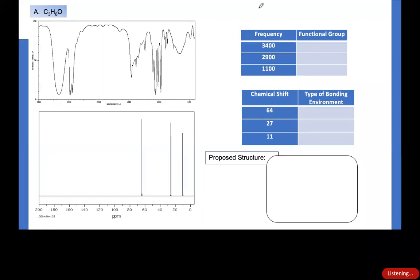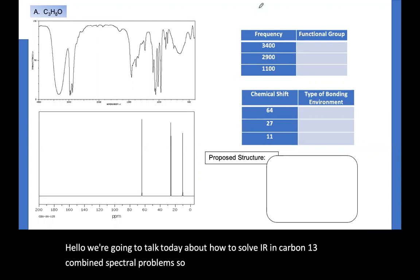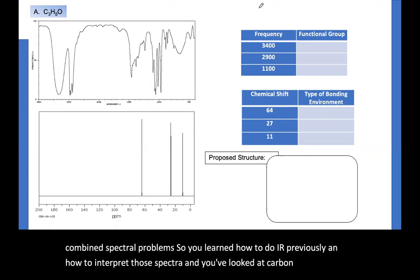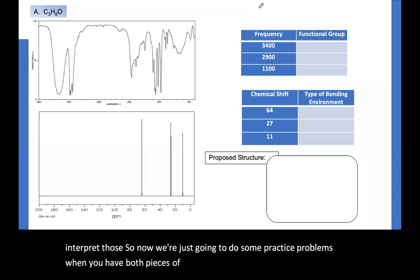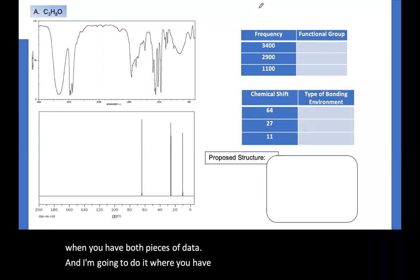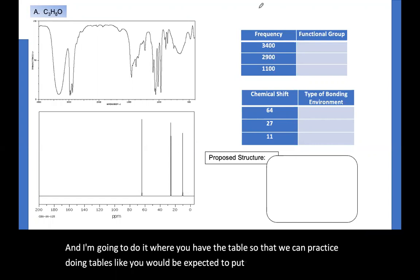Hello, we're going to talk today about how to solve IR and carbon-13 combined spectral problems. So you learned how to do IR previously and how to interpret those spectra, and you've looked at carbon-13 and how to interpret those, so now we're just going to do some practice problems when you have both pieces of data. I'm going to do it where you have the tables so that we can practice doing tables like you would be expected to put into your lab report for 201.